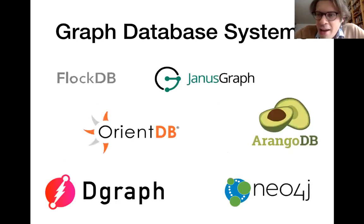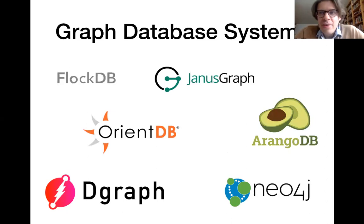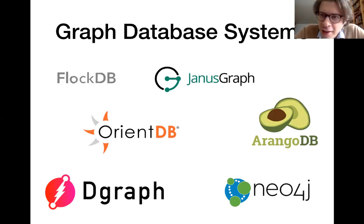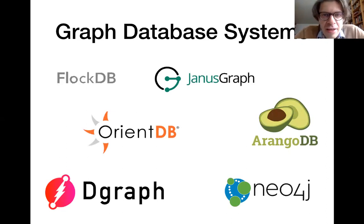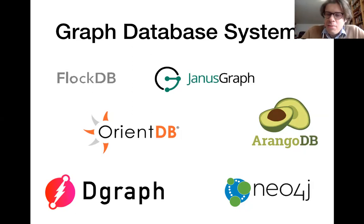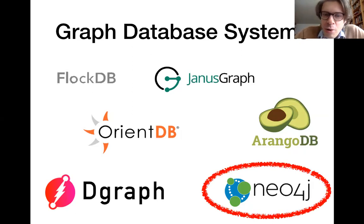After that, we started discussing different data types. For most of the course we have been looking at relational data — data tables basically. Here we looked at three other data formats that have motivated specialized systems for processing. In particular, we have been looking at graph database systems, which process data that can be conveniently represented in the form of a graph. There are various representatives; in particular we discussed the Neo4j system and its corresponding query language, which is somewhat close to SQL in certain aspects.